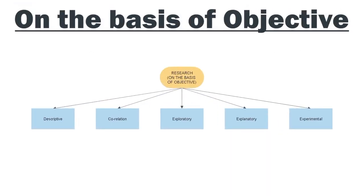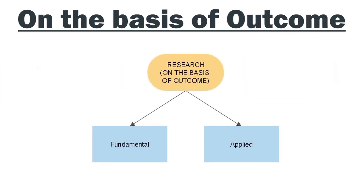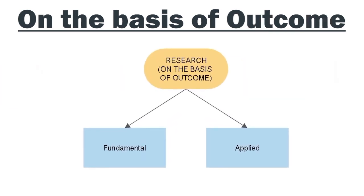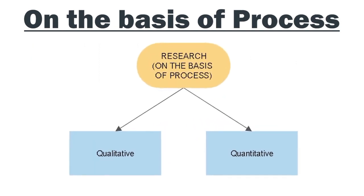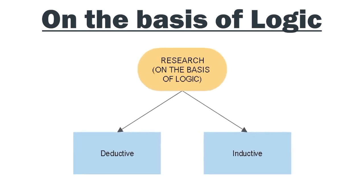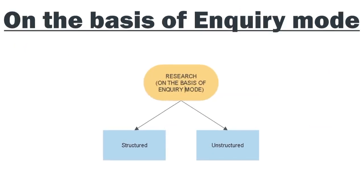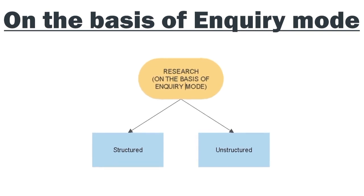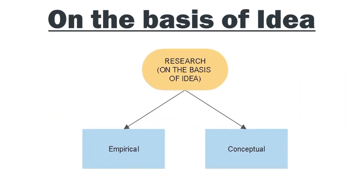On the basis of objective, research is of five types: descriptive, correlation, explanatory, exploratory, and experimental. On the basis of outcome, it is fundamental and applied. On the basis of process, it is qualitative and quantitative. On the basis of logic, it can be deductive and inductive. On the basis of inquiry mode, it is structured and unstructured. And on the basis of idea, it is empirical and conceptual.